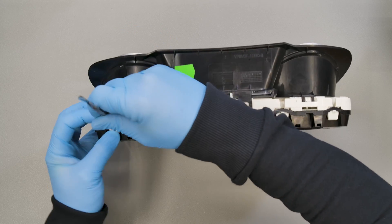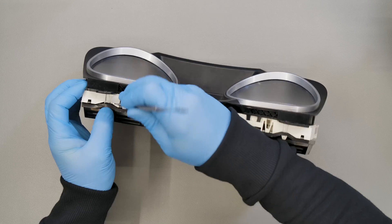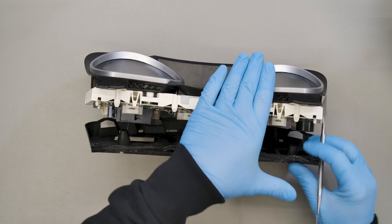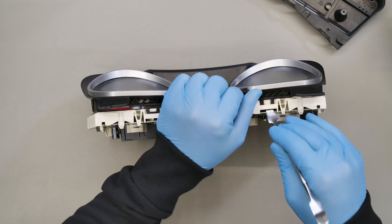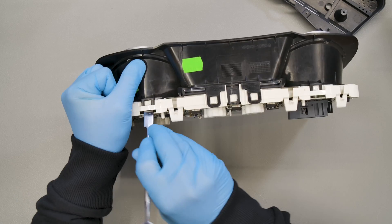Position the dashboard as shown and use the spudger to release the black plastic backing. Then, remove the two parts at the front.